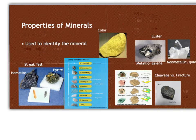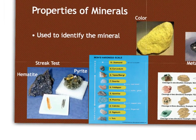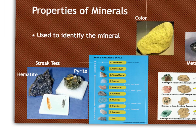In order to identify minerals, we use certain properties. The first one is the streak test — the streak is just the color of the mineral in powdered form. This mineral is hematite, and it produces a reddish-brown streak. Here we have pyrite, and it's kind of a bronzy, dark brown color. So the streak test can help you determine pyrite versus hematite.